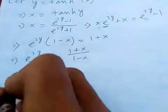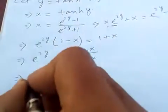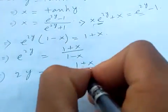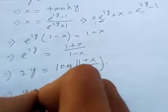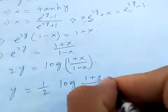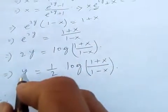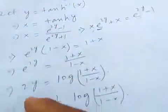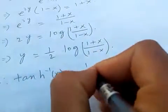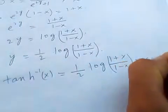Taking logarithm, we get 2y equal to log of 1 plus x over 1 minus x, and so y is equal to half of log of 1 plus x over 1 minus x. This completes the proof.